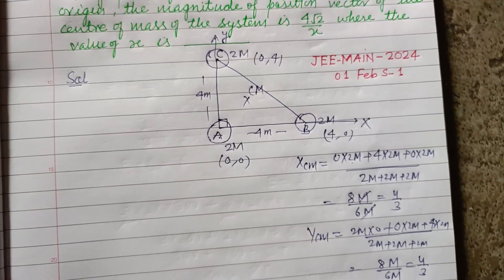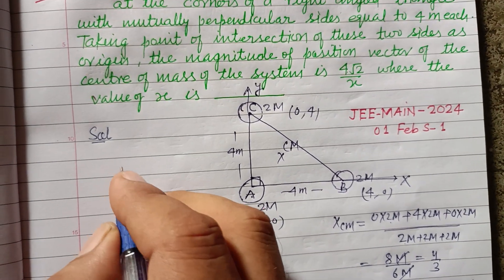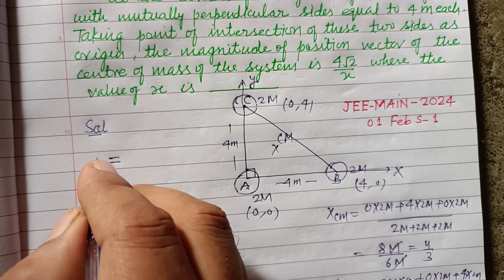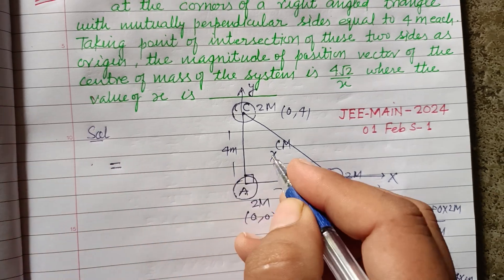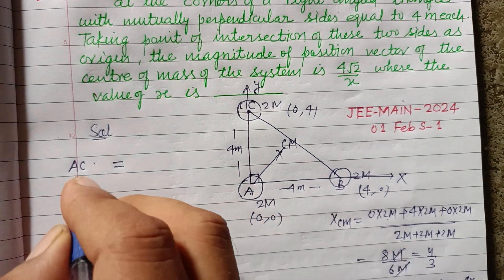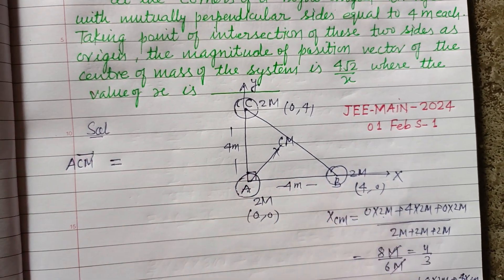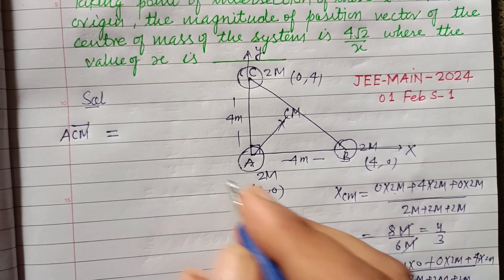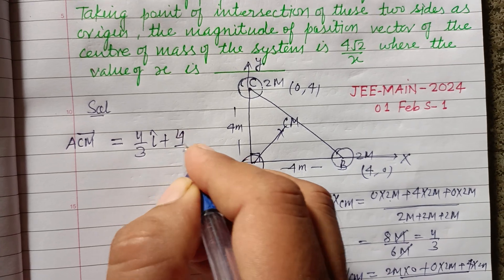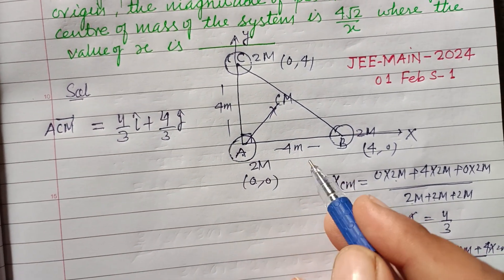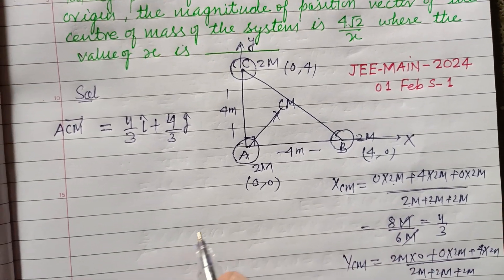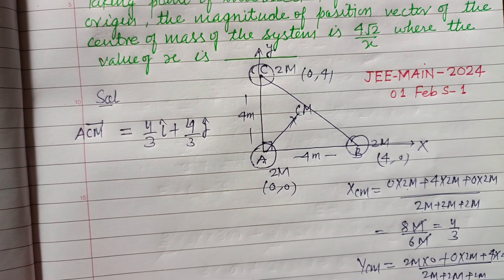So the center of mass position vector, let it be A_CM, equals (4/3)î + (4/3)ĵ, because the x-coordinate of CM is 4/3 and also 4/3 in y. Therefore the position vector of CM is this.